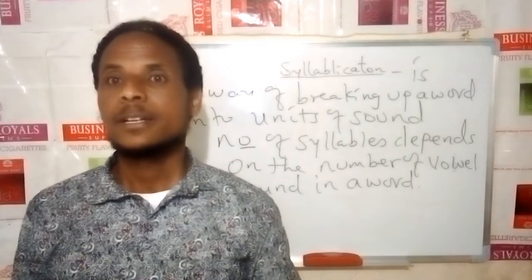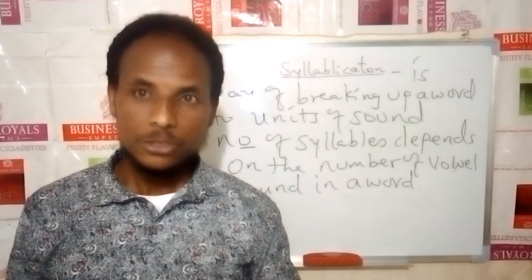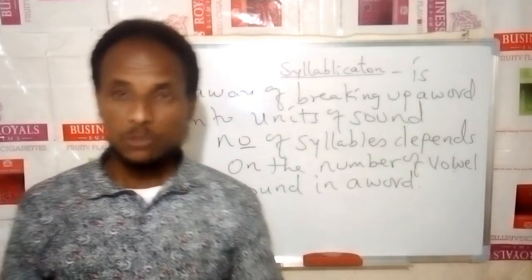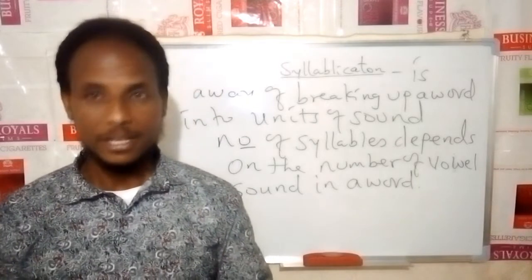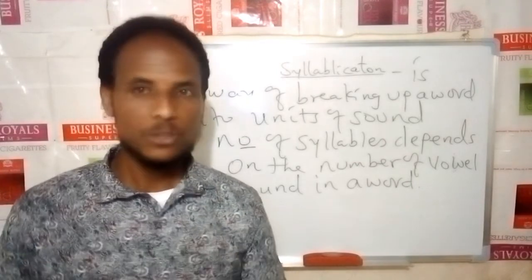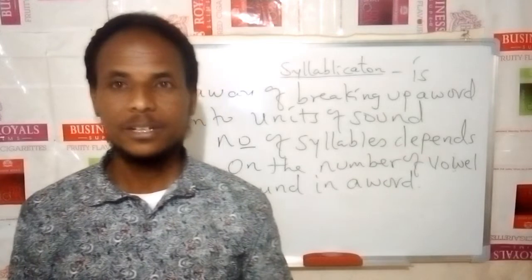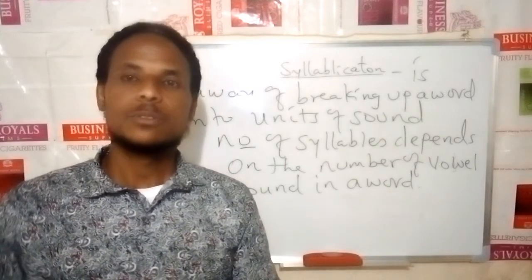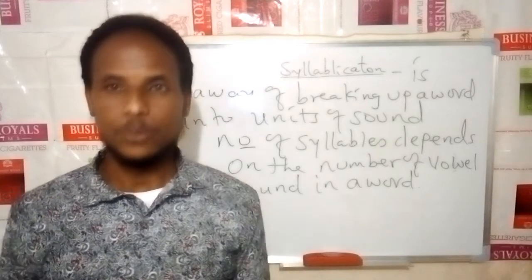If there is one vowel sound in a word, it's called monosyllabic. If there are two vowel sounds in a word, it's called disyllabic. So the number of syllables depends upon the number of vowel sounds in the word.